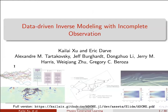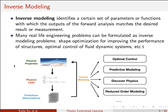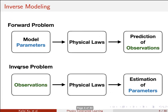I will talk about data-driven inverse modeling with incomplete information or observation. There are actually several talks on inverse modeling already, so I will quickly give a review. Inverse modeling is used to identify a set of parameters or functions in your models that has some output that matches your observation or measurements.